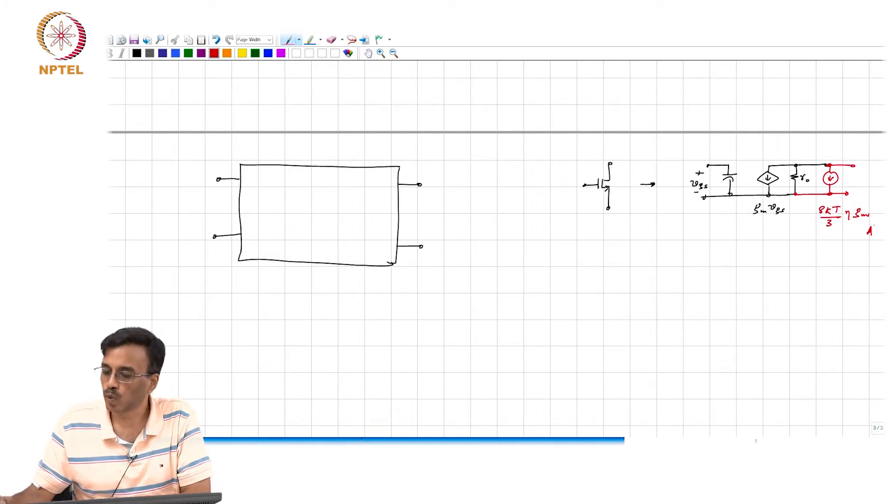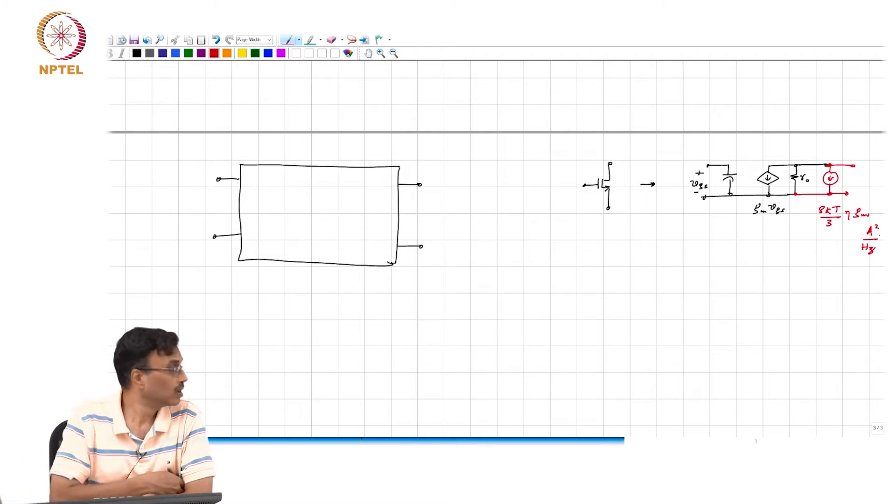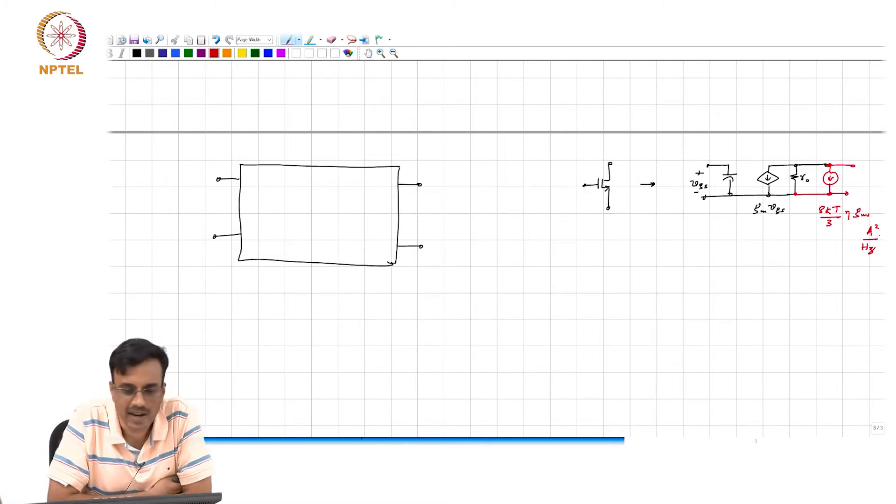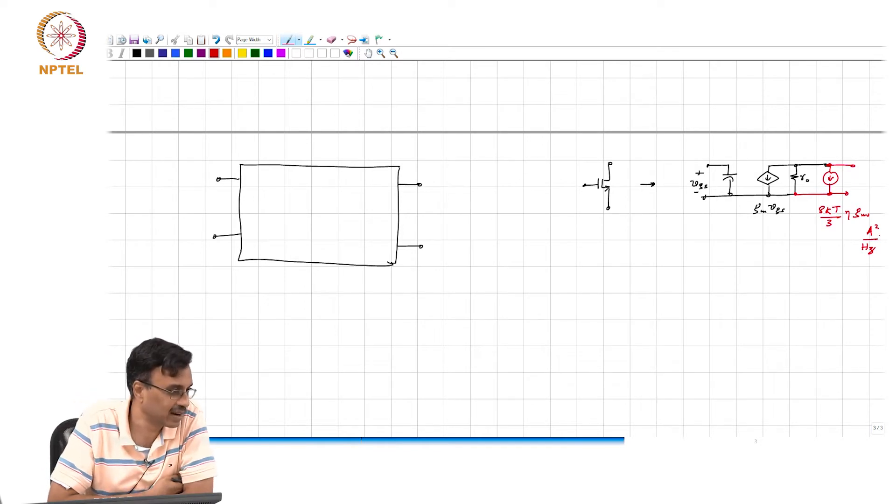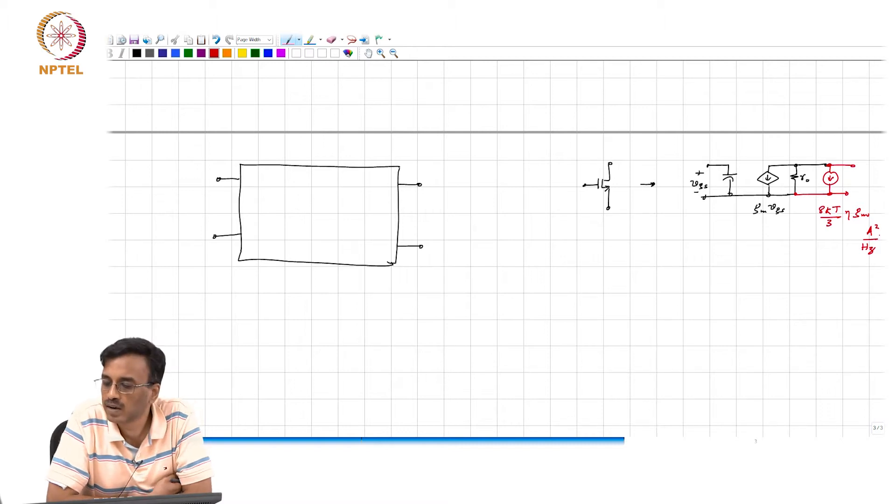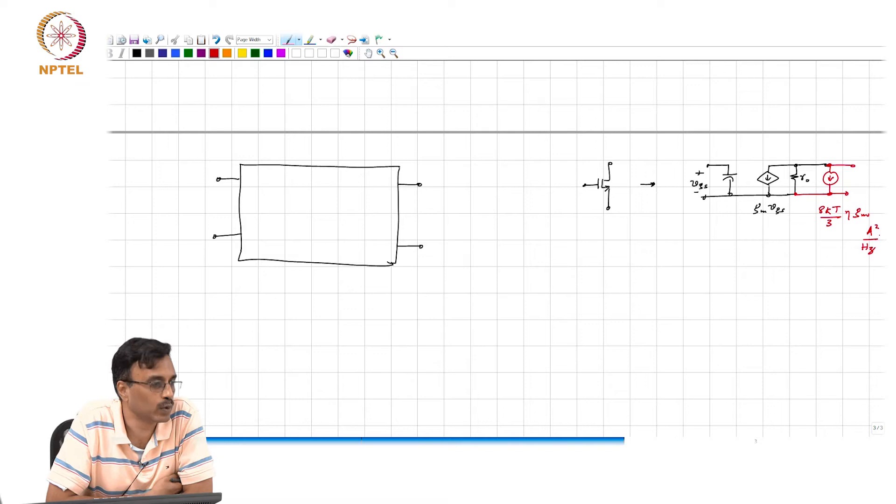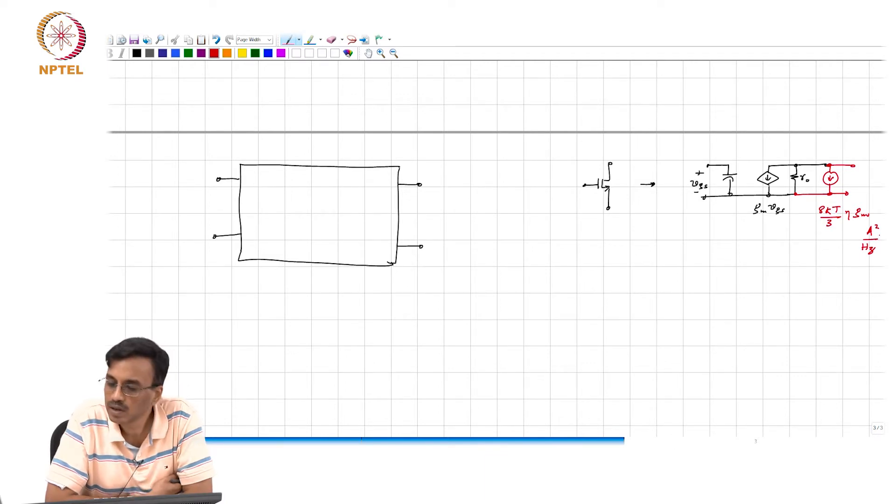What are the units? It is ampere square per hertz. And that eta is some non-ideality factor whose details depend on the transistor channel length. But as far as circuit work is concerned, we just assume, we are not going to derive how you get 8kT over 3 eta times gm, just like we did not derive or question the fact that the noise spectral density of voltage spectral density of the resistor is 4kT R. We just take that for granted and work with it.